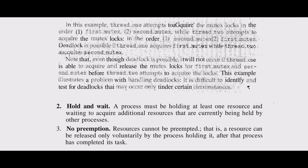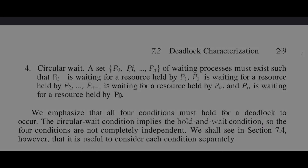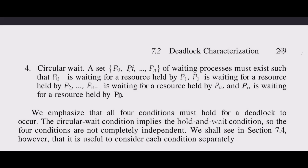Third — No Preemption: Resources cannot be preempted, i.e., a resource can be released only voluntarily by the process holding it after that process has completed its task. Fourth — Circular Wait: A set of waiting processes P0 through Pn must exist such that P0 is waiting for a resource held by P1, P1 is waiting for a resource held by P2, ..., Pn-1 is waiting for a resource held by Pn, and Pn is waiting for a resource held by P0. All four conditions must hold for a deadlock to occur.